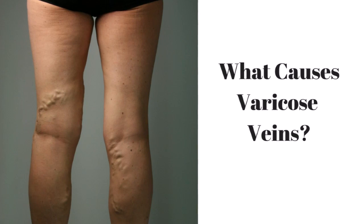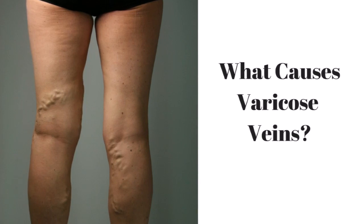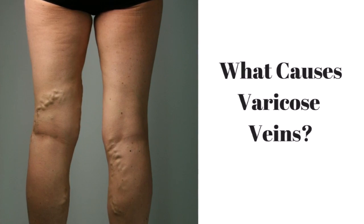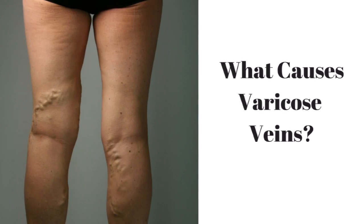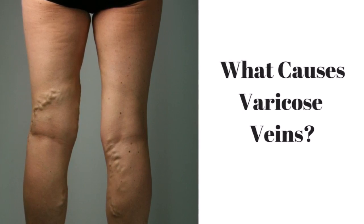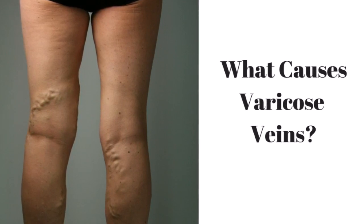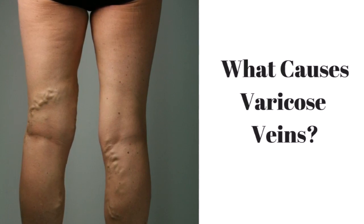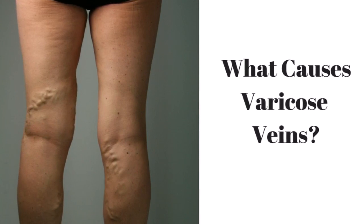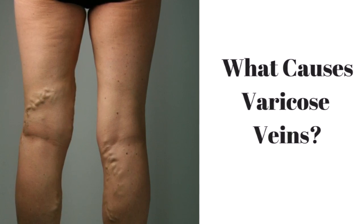Varicose veins are usually caused by weak vein valves. Inside your veins are tiny one-way valves that open to let the blood through and then close to prevent it flowing backwards. Sometimes the valves of the veins become stressed and lose their elasticity, causing the valves to weaken. If the valves do not function properly, this can cause the blood to leak and flow backwards.